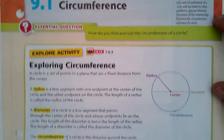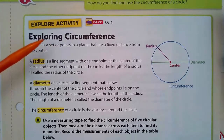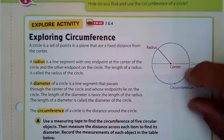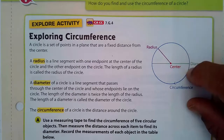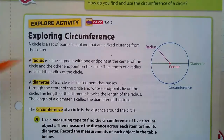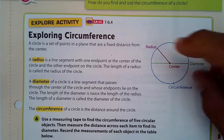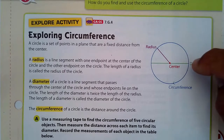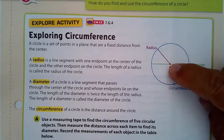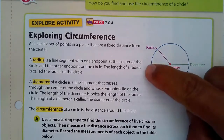We're going to explore circumference and define a circle first. A circle is a set of points in a plane that are at a fixed distance from the center. The radius is the distance from the center to the edge of the circle. The diameter is a line segment that crosses from one edge to the other and passes through the center. The circumference is the distance around the circle — think of it as the perimeter of the circle.